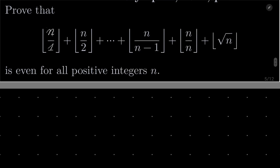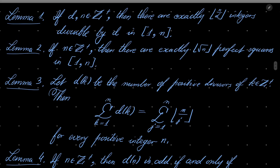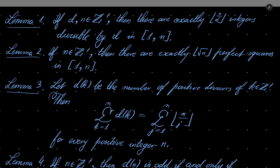Here are my hints. My reasoning will be based on the following four lemmas. First lemma says that if d and n are positive integers, then there are exactly floor of n over d integers divisible by d in the interval from 1 to n. Second lemma: for every positive integer n, there are exactly floor of square root of n perfect squares in the interval from 1 to n.